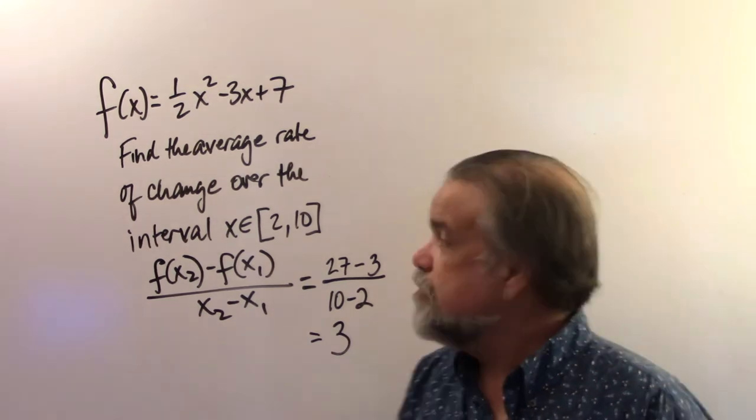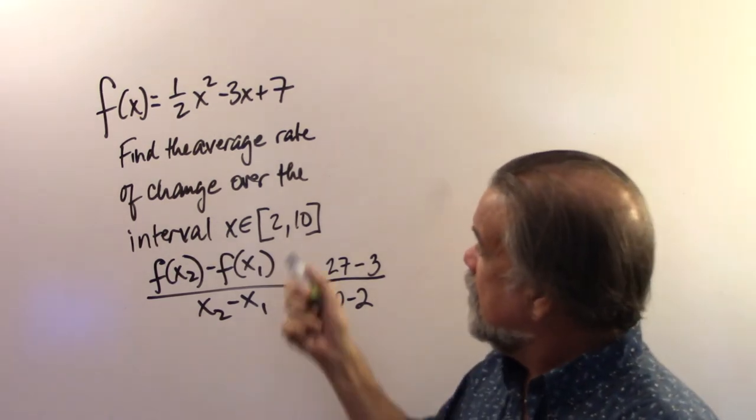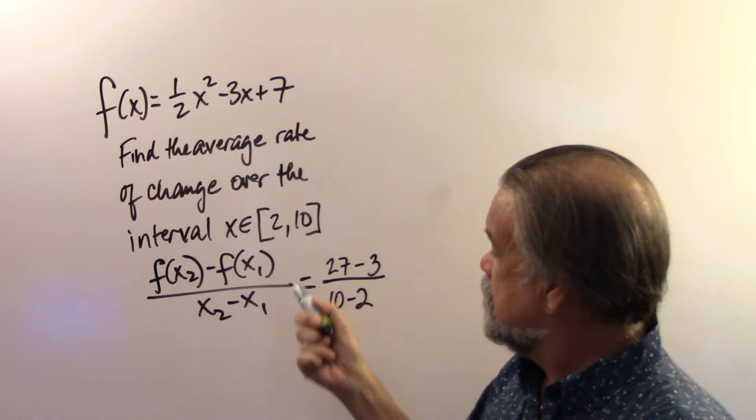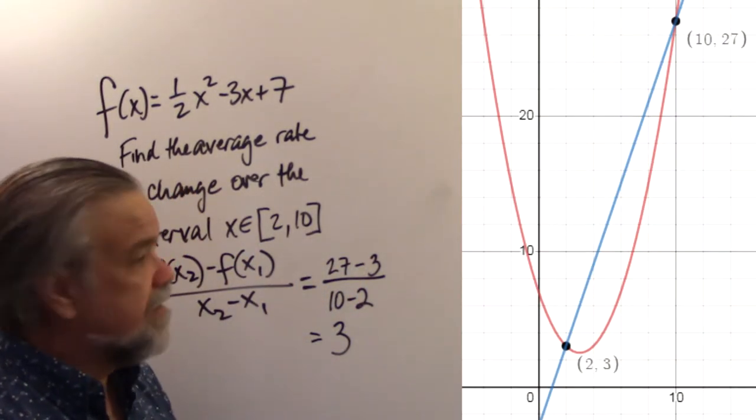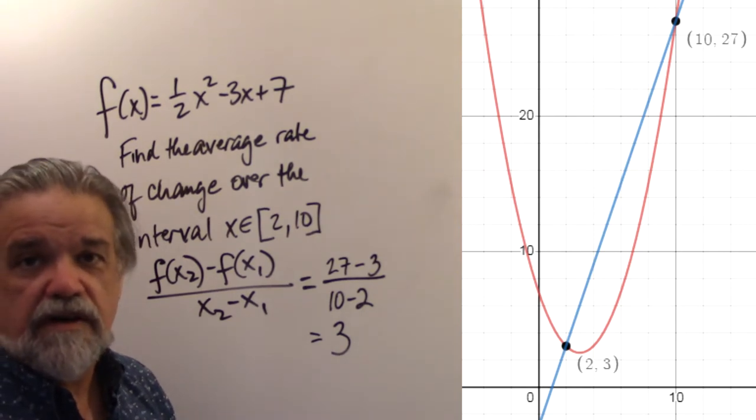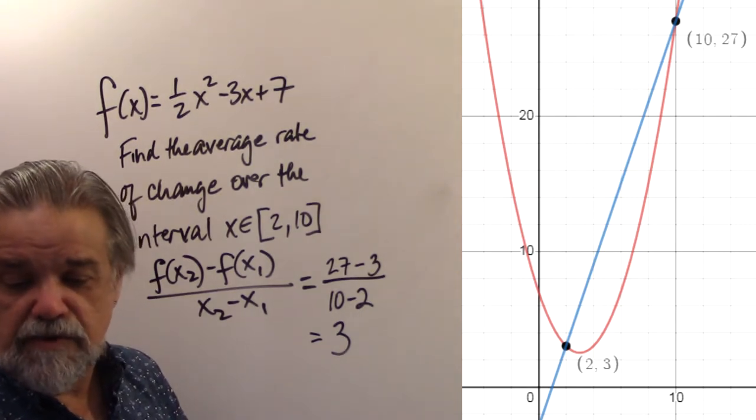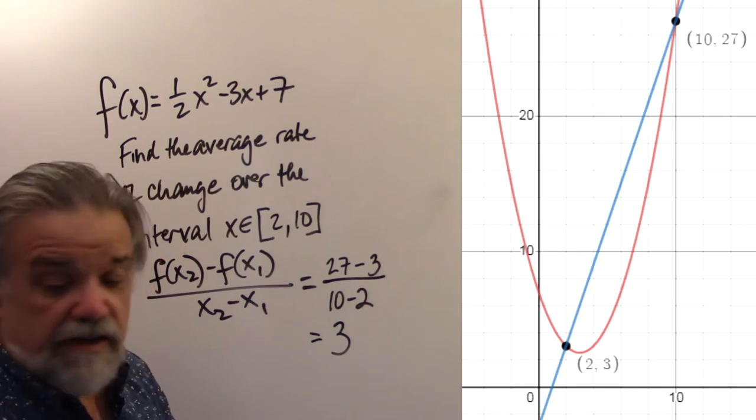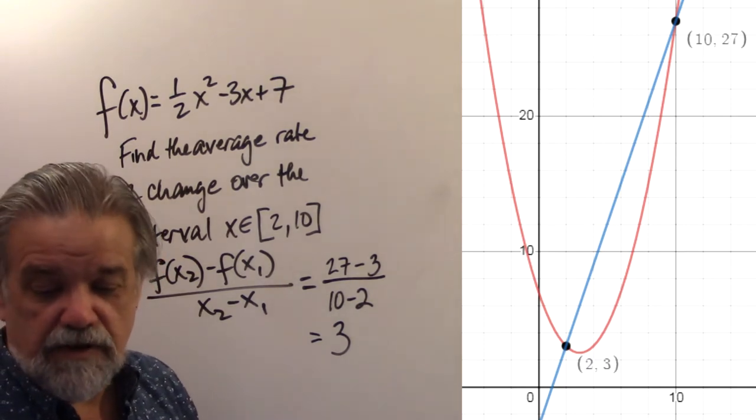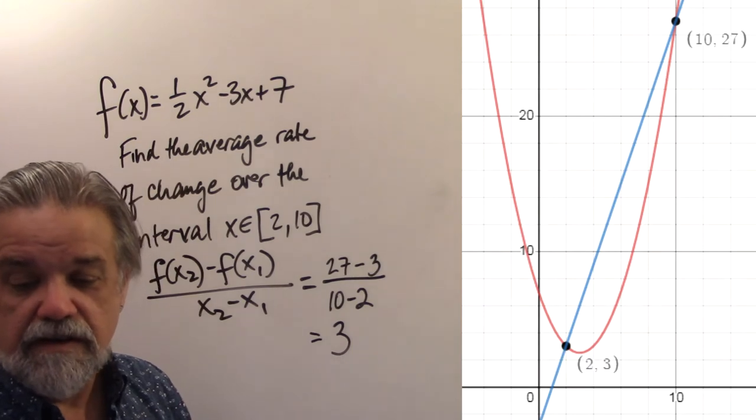So the average rate of change from x equals 2 to x equals 10 is 3. And let's see what that graph looks like. And sure enough, we see that it's a parabola. And we're going from the point (2,3) to the point (10,27). And sure enough, that line has a slope of 3. Let's do another one.